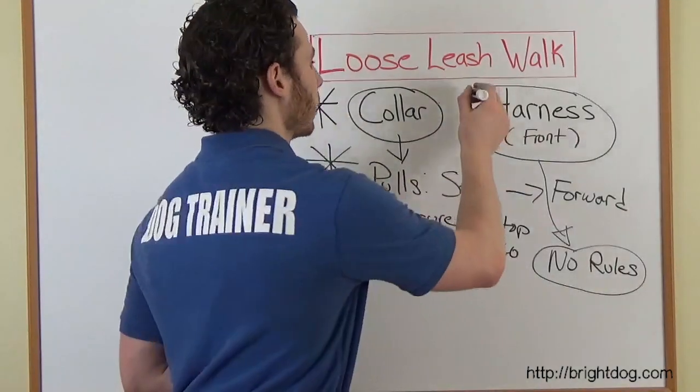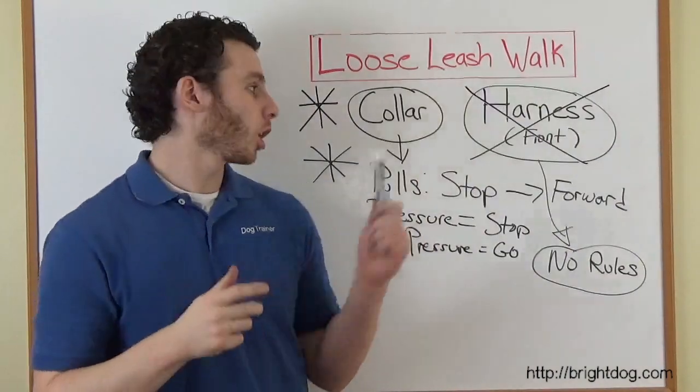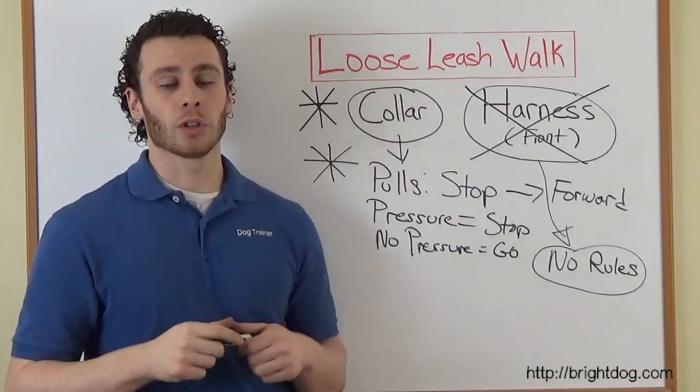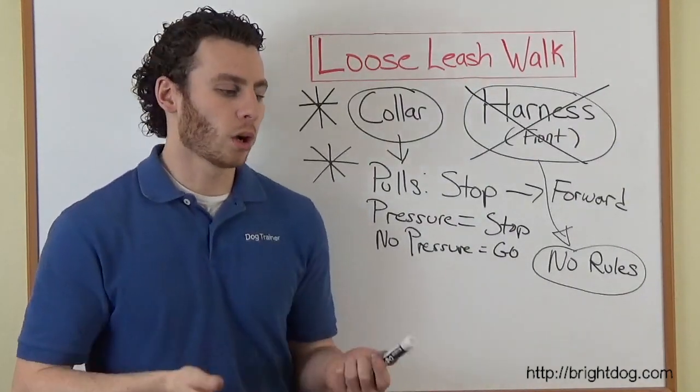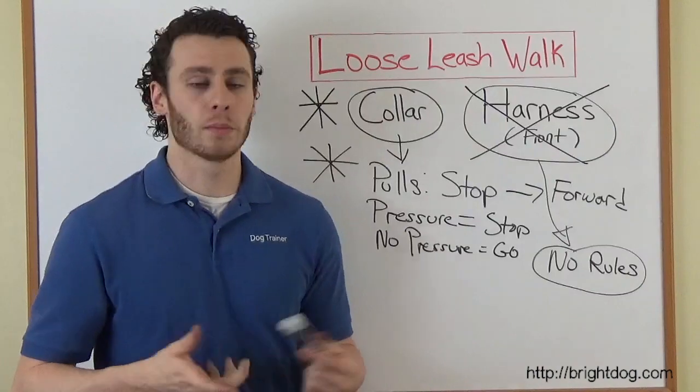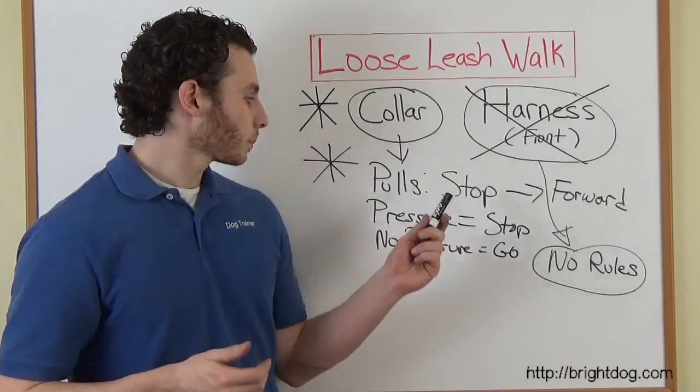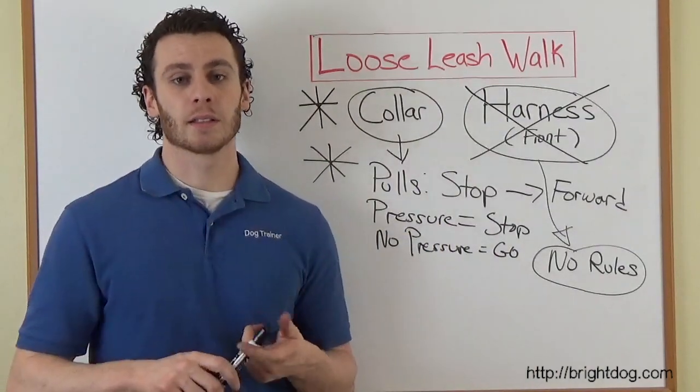Like I said, eventually the goal is to not need the harness. The goal is eventually that your dog pulls so rarely on the collar that you can take him anywhere on just the collar. Because it's so rare that he pulls anymore, odds are you won't have to ever stop in the middle of the street or wherever it is that could be dangerous. But it takes practice. It takes practice and it takes consistency.